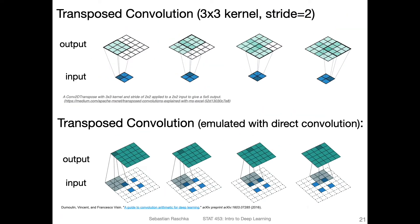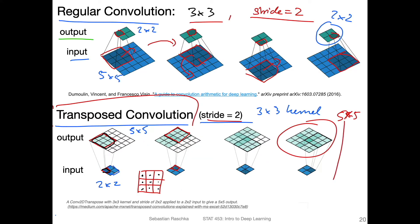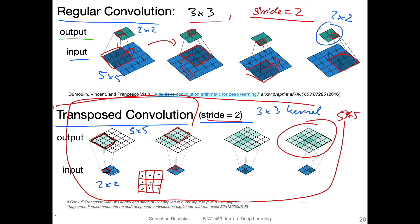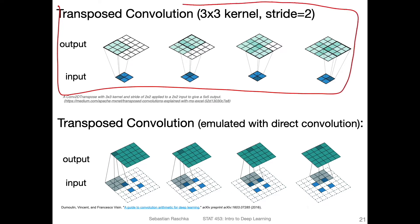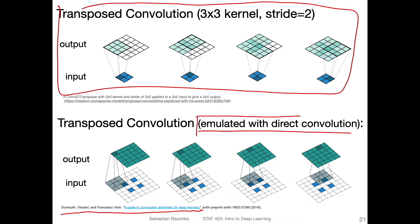This is how it conceptually works, and this is how I like to think about a transposed convolution — it's intuitive to me. However, in practice, this is usually emulated with a direct convolution. There's an excellent paper linked here, 'A Guide for Convolution Arithmetic for Deep Learning,' which I mentioned earlier when we talked about convolution networks. In this paper they also describe the so-called emulated approach using a direct convolution. Instead of implementing this process directly, there's a process that uses a regular convolution to implement the transposed convolution. Both achieve the same thing — it's just a different way of carrying it out.